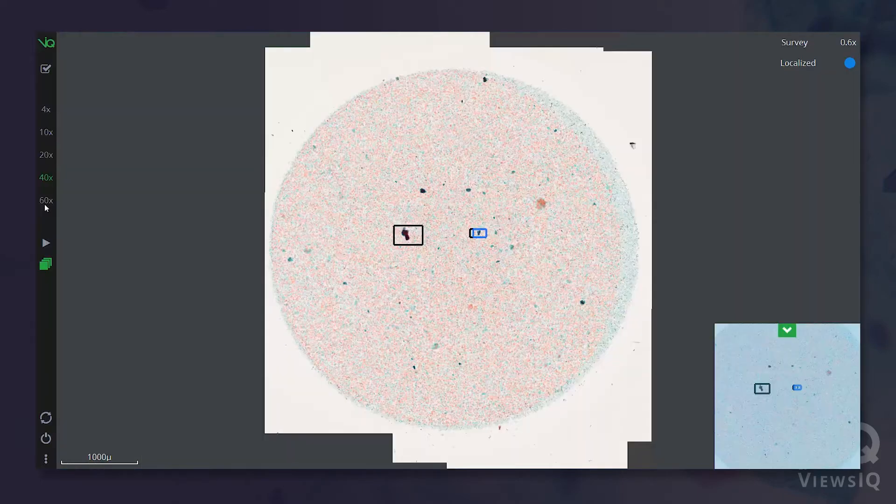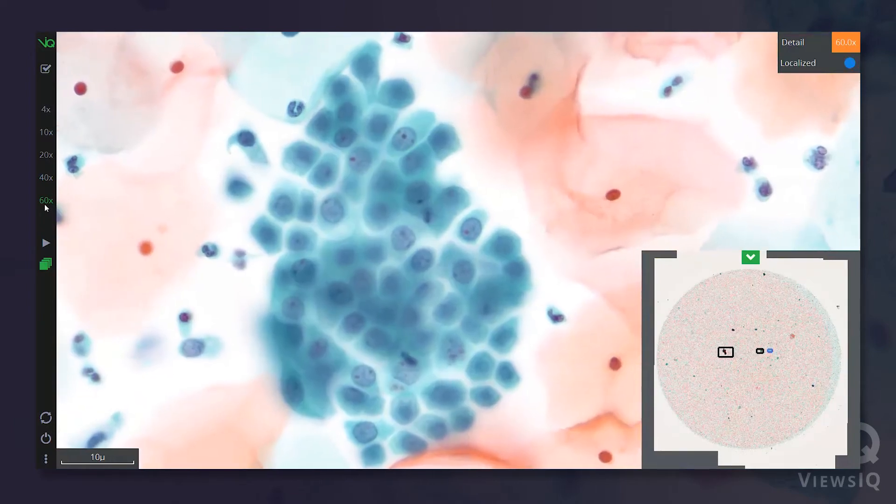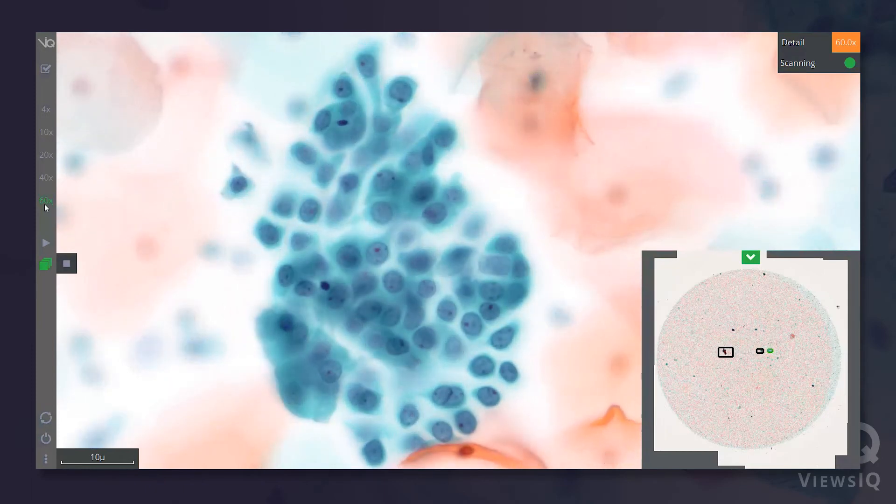Select volume recording and then simply start and stop recording as you move up or down through the sample. To record another region or 3D volume, just move to that region and record. Here we record a second 3D volume at a 60 times magnification.